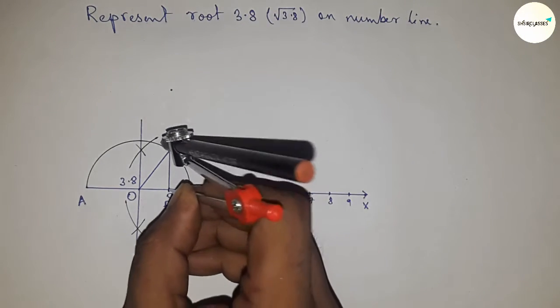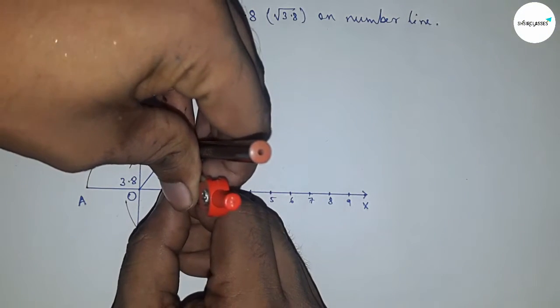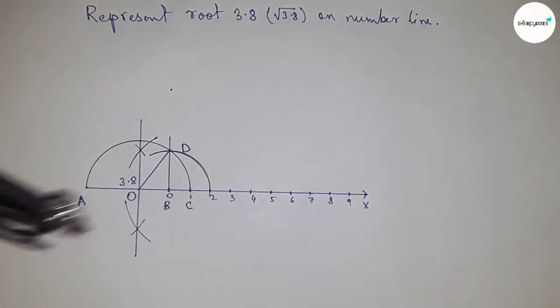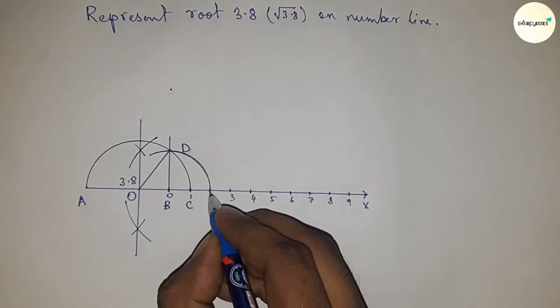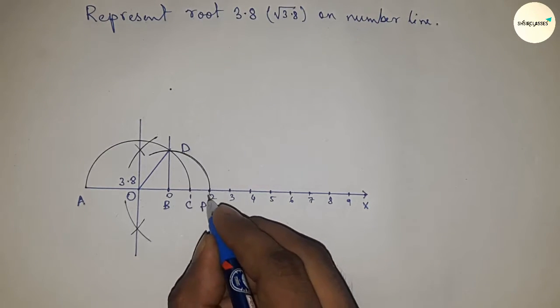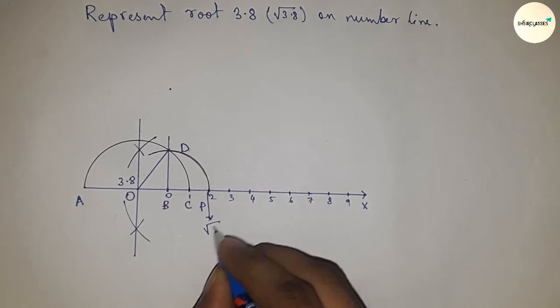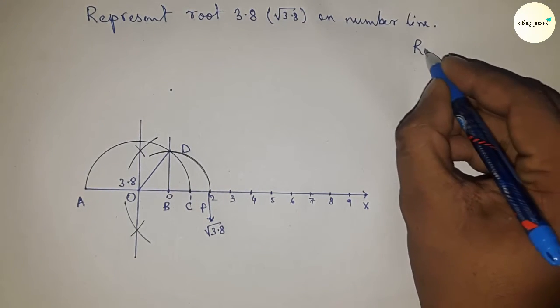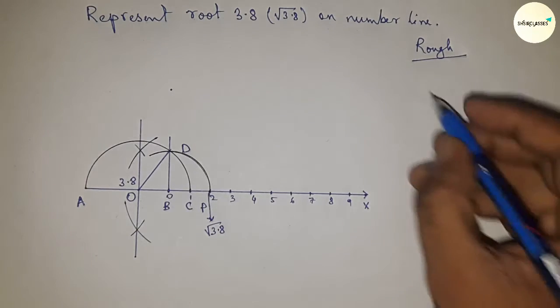Now take the distance BD with the compass and draw an arc which meets the number line at point P. This is the representation of root 3.8 on the number line. Now let's discuss the back calculation of root 3.8.